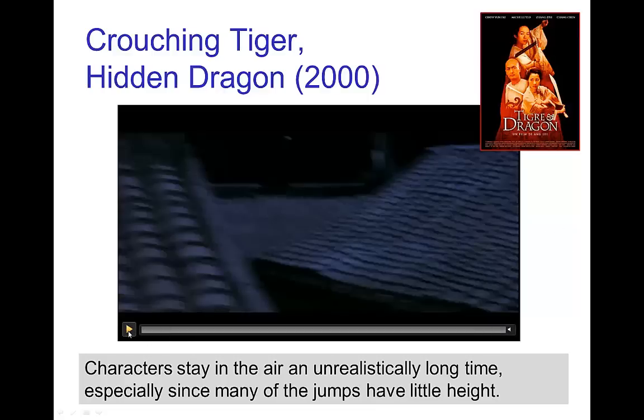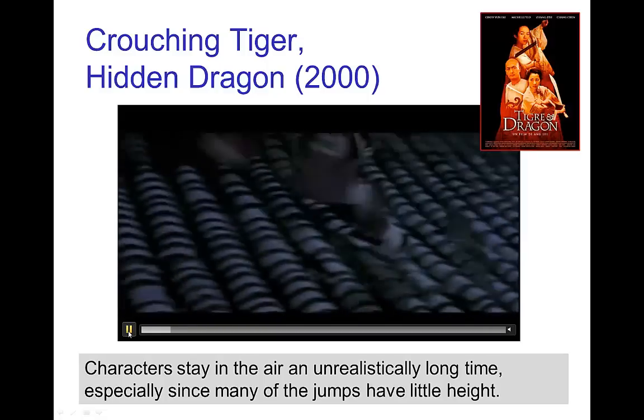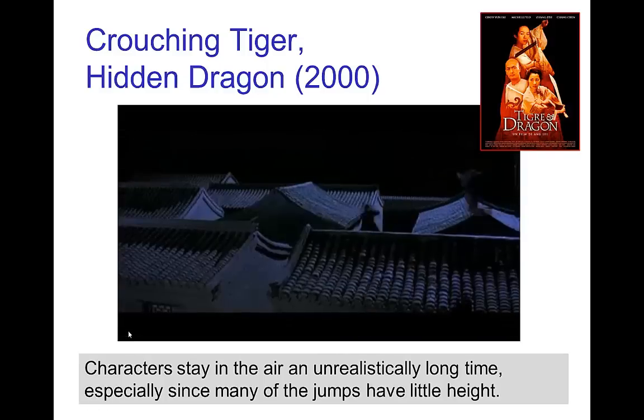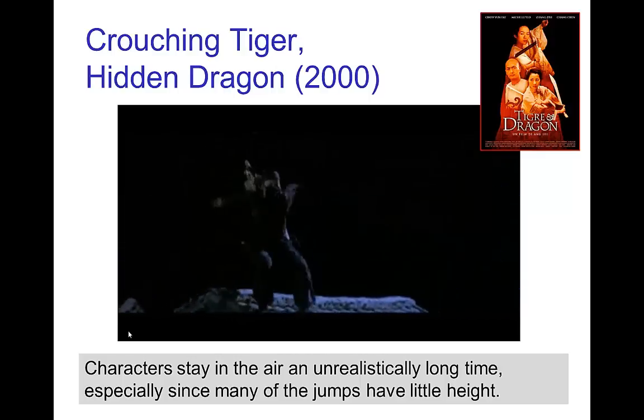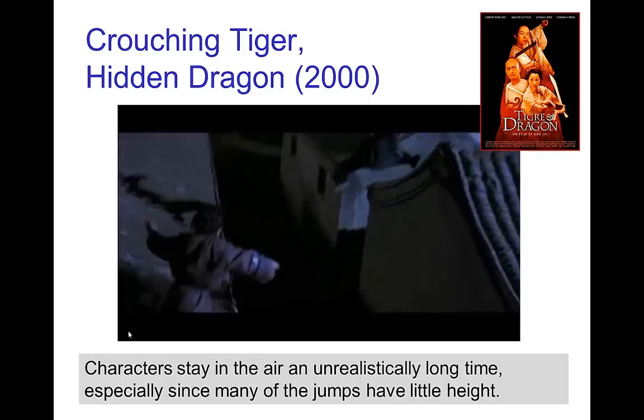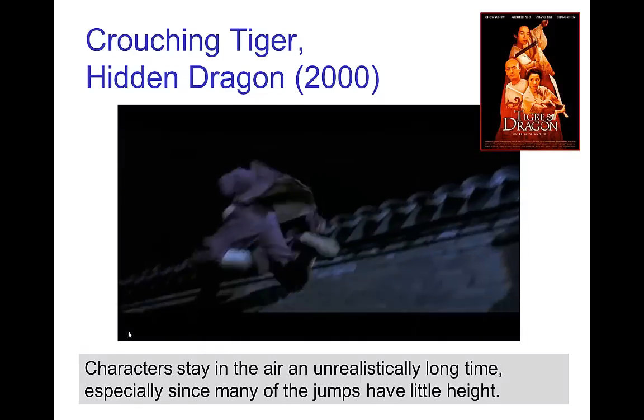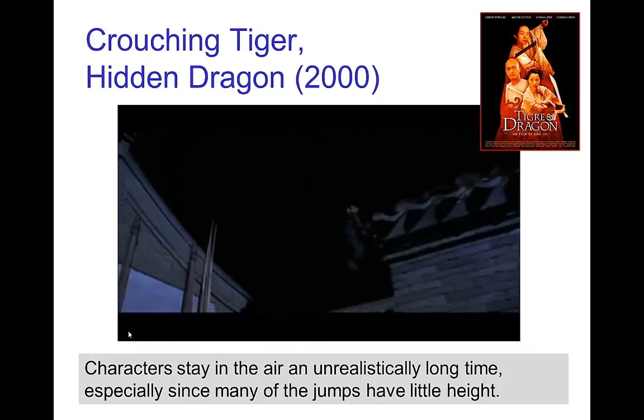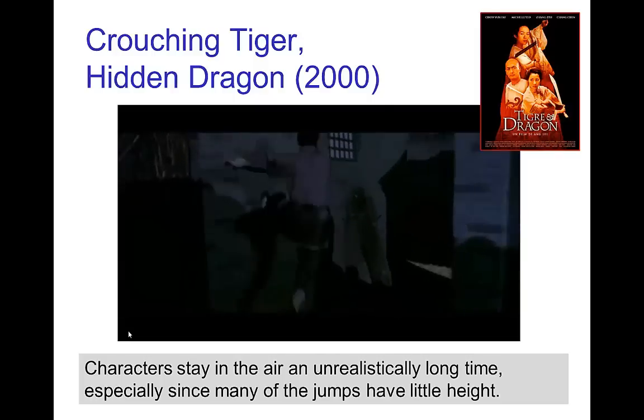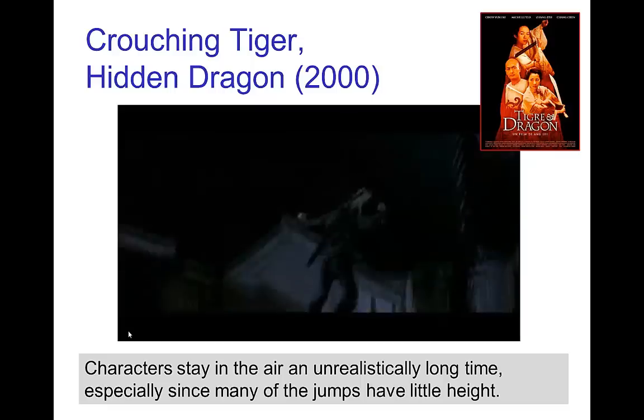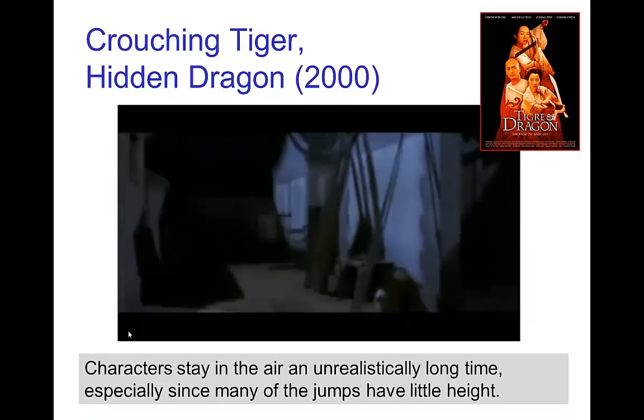Now, here's a scene from Crouching Tiger, Hidden Dragon, and you can notice that in the scene the time in the air is significantly longer than you would find in realistic jumping. So the characters, even though their jumps don't rise very high, they spend a lot of time in the air. Now, of course, the reason is that this was filmed using wire work, so the actors here are being supported by wires and held up in the air much longer than they would be in a normal jump.